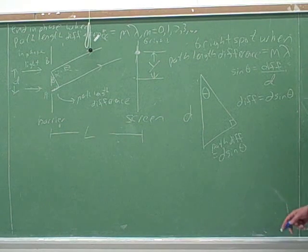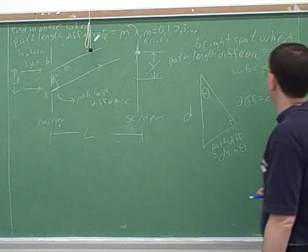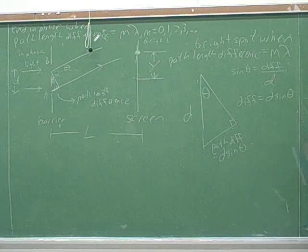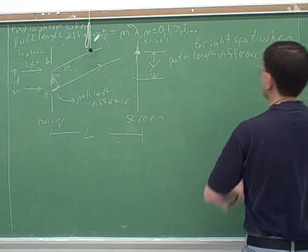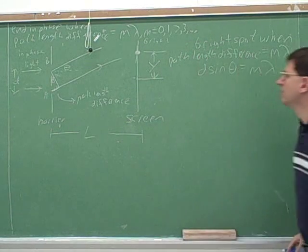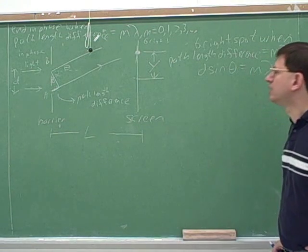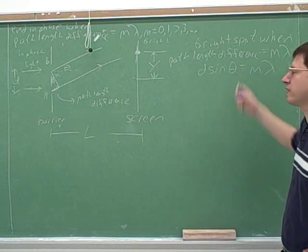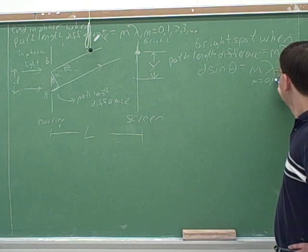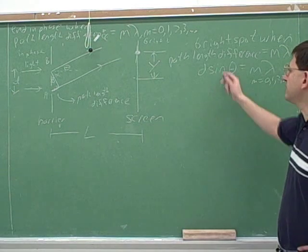Well, remember that we know we're going to get a bright spot whenever the path length difference is a whole number of wavelengths. Well, now we know that the path length difference is d sine theta. So now we can put this up into here. So now we have this formula. You probably saw your instructor use this formula in class. So it's good to know where this formula is coming from. So notice, we already explained what the n lambda means. The n lambda just means a whole number of wavelengths.